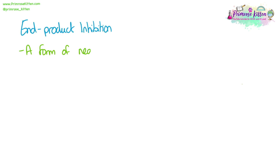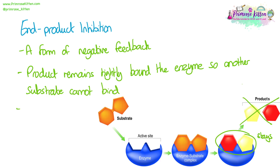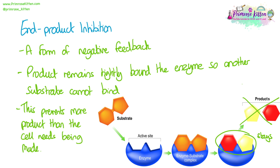End product inhibition is a form of negative feedback — a way to stop more and more product being made and ensure a cell doesn't overproduce something. It can work where the product remains tightly bound to the enzyme so another substrate can't come and bind. This prevents more product than the cell needs from being made; if the product stays bound to the active site, the active site isn't free to carry out another reaction.